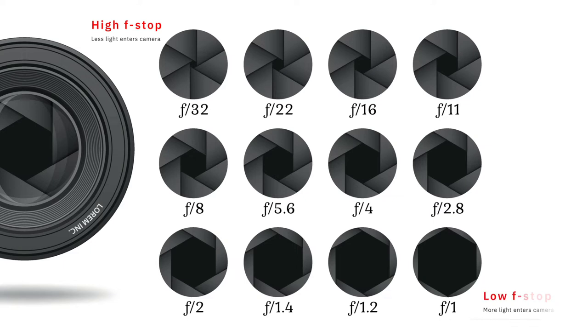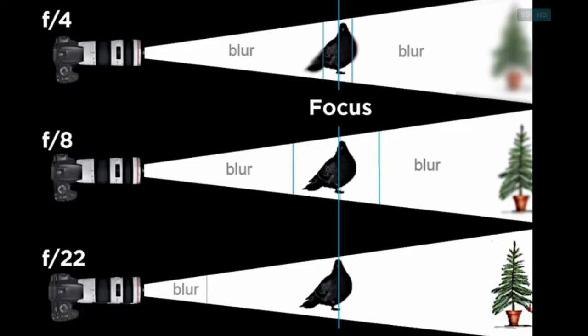Another consequence of adjusting the aperture is adjusting the depth of field. A lower f-stop will allow more light into the camera, but it also results in a decreased or shallow depth of field, meaning that a small area of the image will be in focus.